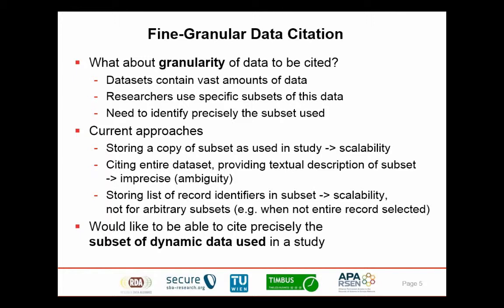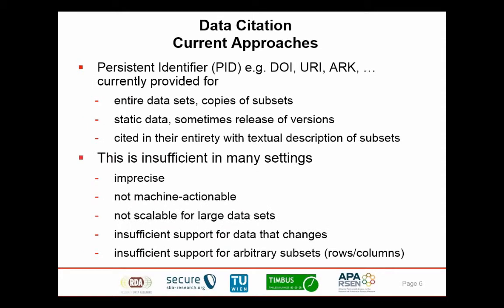What we want to have is a way to precisely identify even a very specific subset of data — an arbitrary combination of rows and columns if we're talking SQL databases — that is being used in the study. The existing approaches of assigning persistent identifiers either to entire data sets or to static data sets released at fixed intervals don't work well with the continuous data streams we see in many eScience domains. We want a precise, machine-actionable way of assigning identifiers.